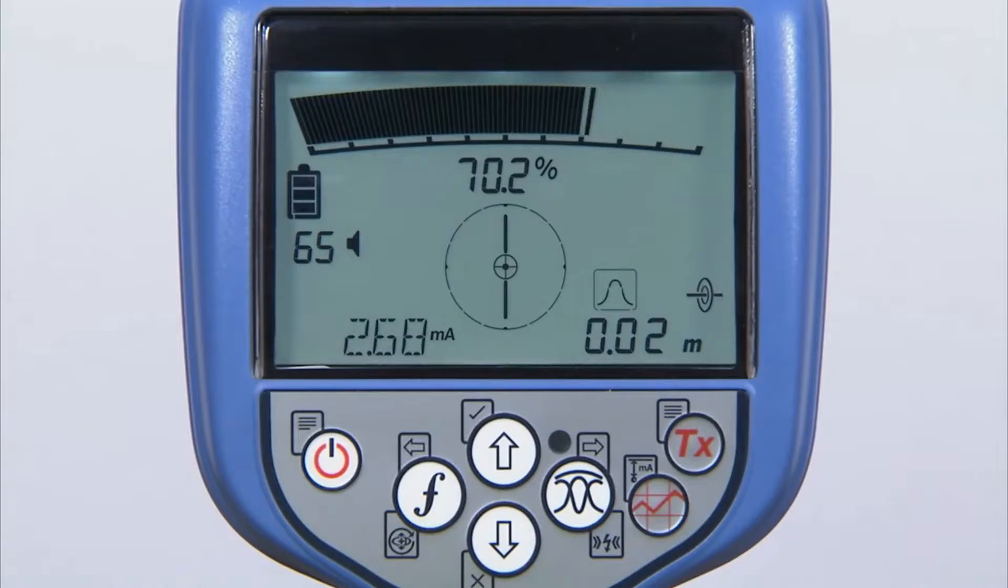The locator can be used to understand how much locate signal is present on the target line at any specific point. The current reading in the bottom left of the locator screen will give you a milliamp reading.